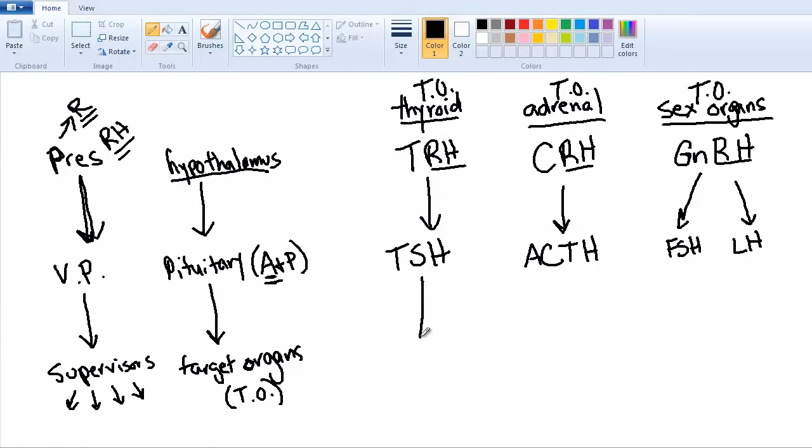When TSH gets to the thyroid gland, the thyroid gland being the target organ, it's going to stimulate the release of T3 and T4, also known as thyroxine. And then these hormones are going to take effect on the rest of the body. For the adrenal gland, ACTH is specifically going to stimulate the release of cortisol from the adrenal gland. Cortisol coming out of the zona fasciculata of the adrenal cortex. For more info on the adrenal gland, watch my video on the adrenal gland.